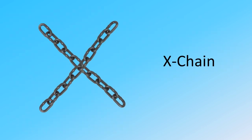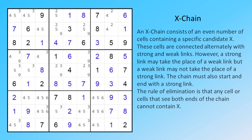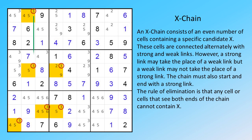X-Chain. An X-chain consists of an even number of cells containing a specific candidate X. These cells are connected alternately with strong and weak links. However, a strong link may take the place of a weak link, but a weak link may not take the place of a strong link. The chain must also start and end with a strong link. The rule of elimination is that any cell or cells that see both ends of the chain cannot contain X.